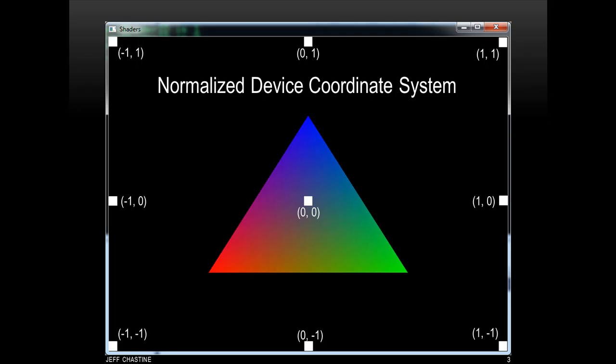One of the underlying assumptions for this example is that we're going to be working in the normalized device coordinate system. What this means is that the range of our coordinate system is going to be between negative 1 and positive 1. So for example, if we wanted a vertex to appear on the left-hand side of the screen, its x coordinate would be negative, and if we wanted it to appear on the right-hand side, it would be positive.